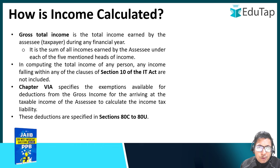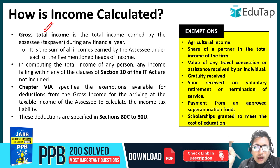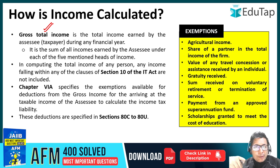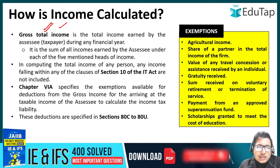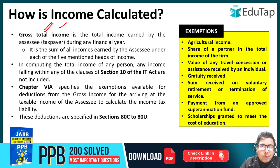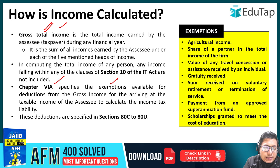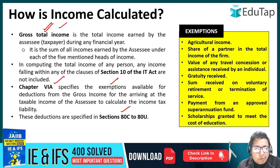So yeh aapki jo total income calculate hogi kisi bhi resident ki, it will be calculated as a total of all the above heads — usse hum kehte hain gross total income: salary income, income from profession and business, income from house property, income from capital gains — yeh saari incomes ko total out kiya jaata hai. From this gross total income, certain exemptions and reductions are allowed — jinki baat hum next lectures mein karenge — and these exemptions are subtracted from your gross total income to arrive at your net taxable income. Fir jo net taxable income calculate hoti hai, uspe tax slabs ke according aapka tax applicable hota hai. These exemptions are mentioned in Chapter 6A of the Income Tax Act, aur Section 80 ke andar bhi bahut saare reductions mentioned hain.